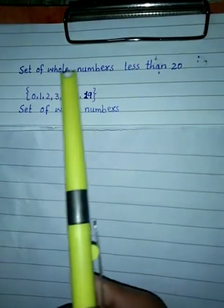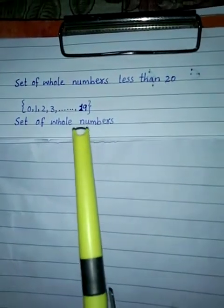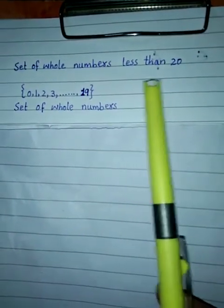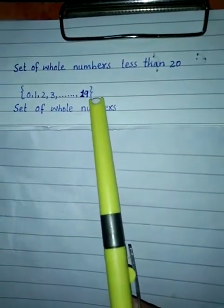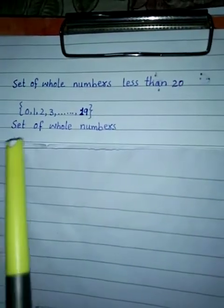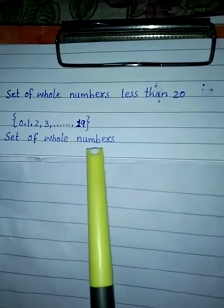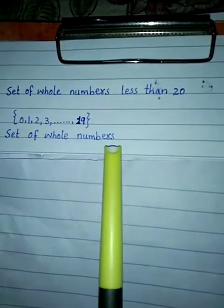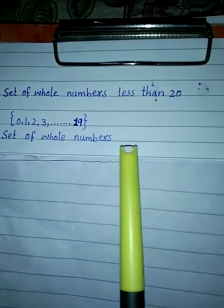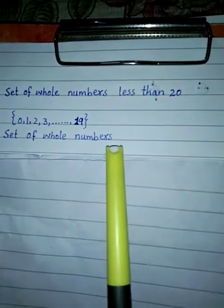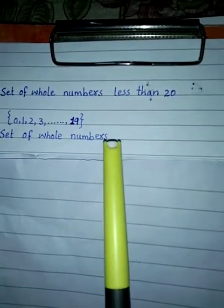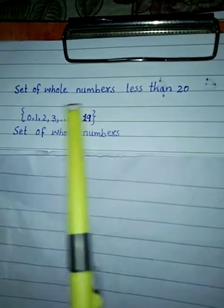Infinite set کی مثال کے لیے ہم finite set والی example لیتے ہیں۔ Finite set میں ہم نے لکھا تھا: set of whole numbers less than twenty — اس میں last element معلوم تھا اور elements limited تھے۔ لیکن اب دوسری example ہے: set of whole numbers — یہاں کتنے numbers لکھنے ہیں، یہ mention نہیں کیا گیا۔